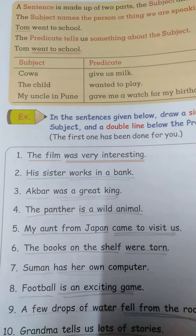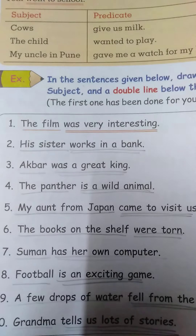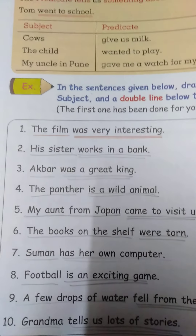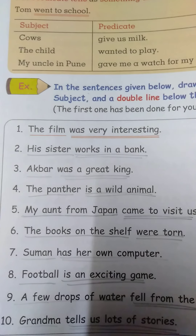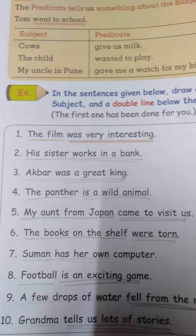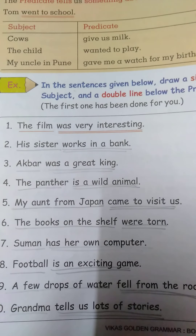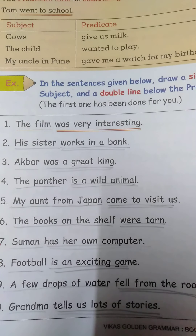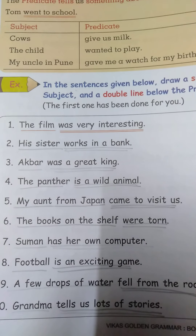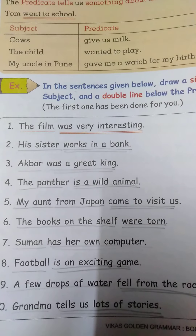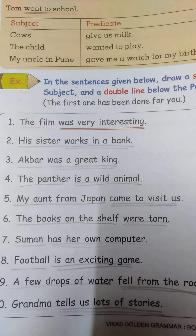'His sister' — subject — 'works in a bank' — predicate. 'Akbar' — subject — 'was a great king' — predicate. 'The panther' — subject — 'is a wild animal' — predicate. 'My aunt from Japan' — subject — 'came to visit us' — predicate.